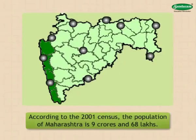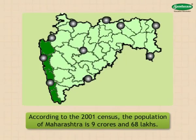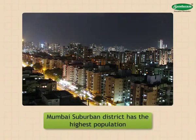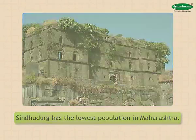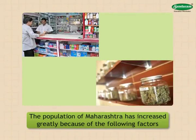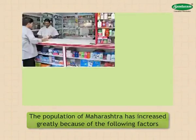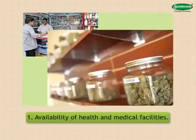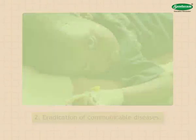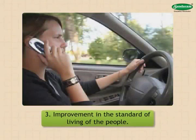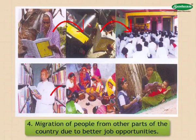According to the 2001 census, the population of Maharashtra is 9 crores and 68 lakhs. Mumbai suburban district has the highest population, whereas Sindhudurg has the lowest population in Maharashtra. The population of Maharashtra has increased greatly because of the following factors: availability of health and medical facilities; eradication of communicable diseases; improvement in the standard of living of the people; and migration of people from other parts of the country due to better job opportunities.